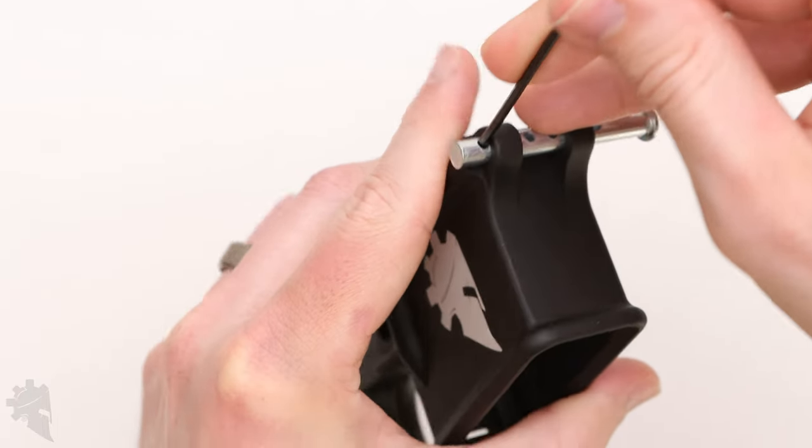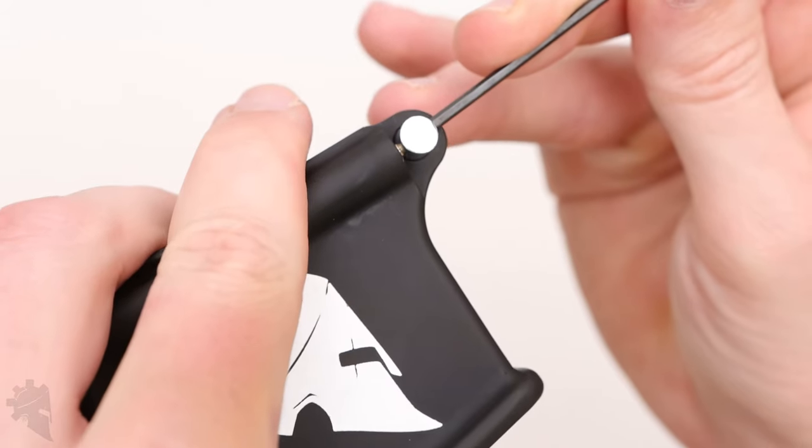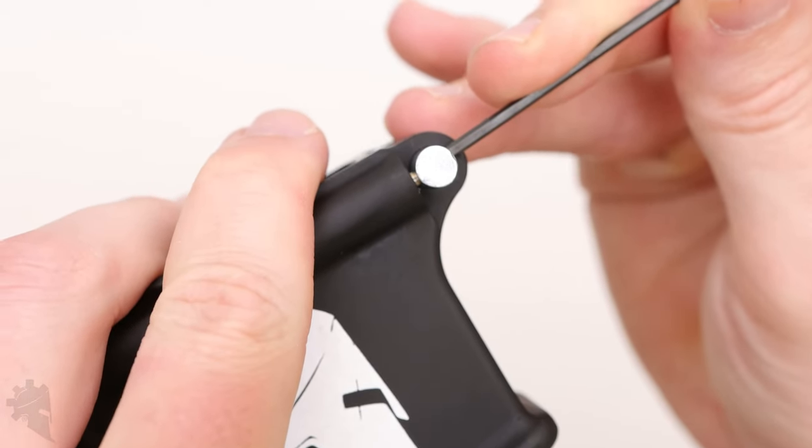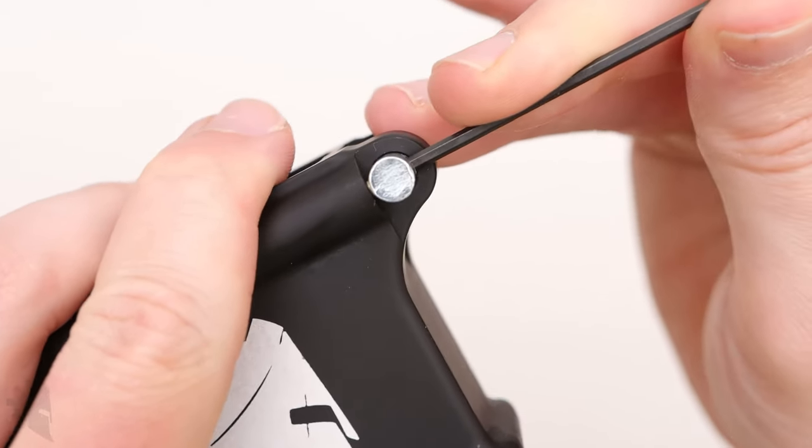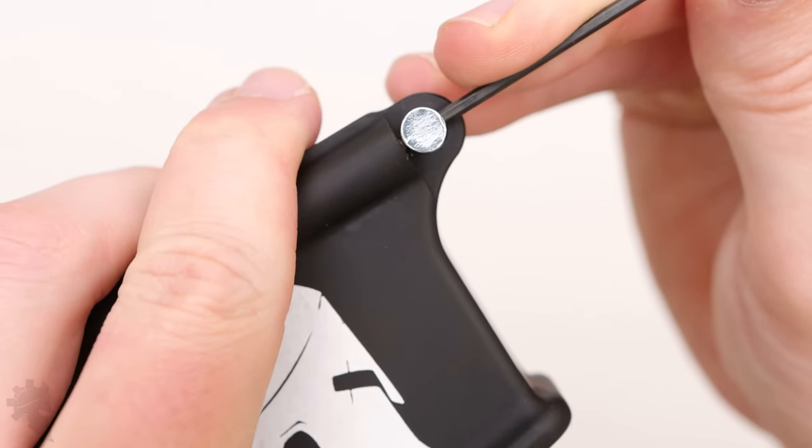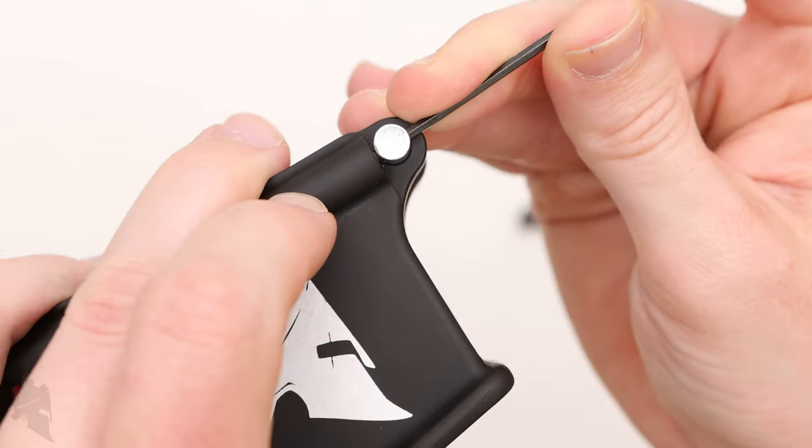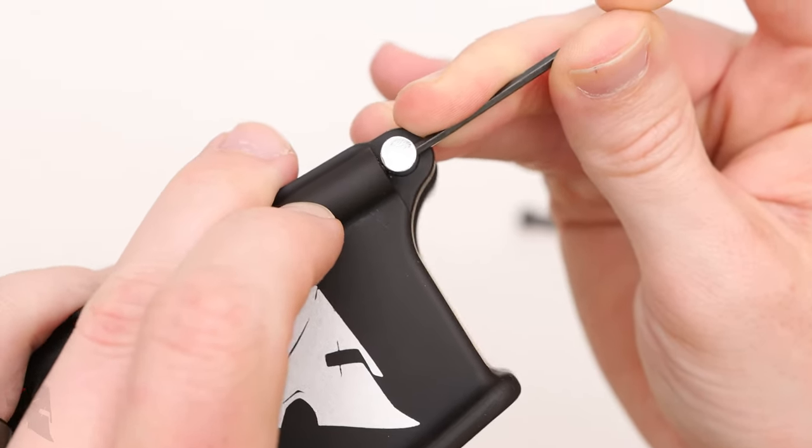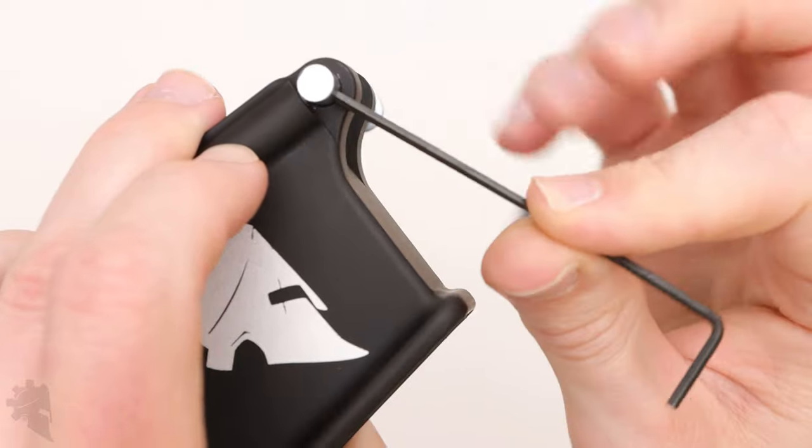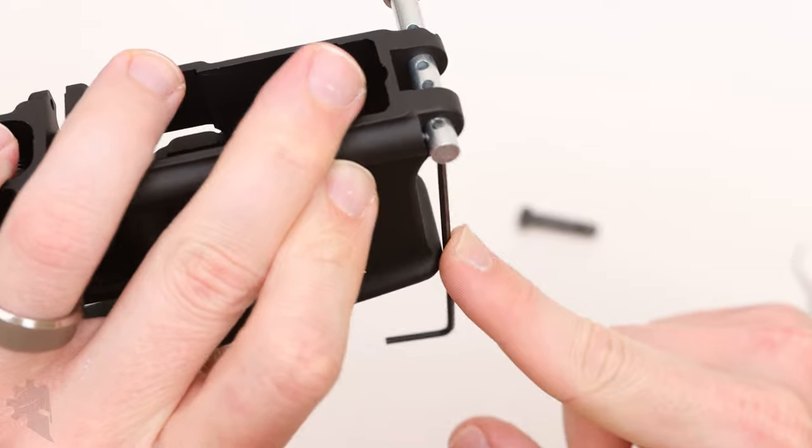You're going to compress the spring. I'm going to go to the side view here so you can see. You're going to compress the spring and the detent just to the point where you can see the Allen wrench there in the gap. So that's the detent, that's the Allen wrench, and then I'm going to rotate the Allen wrench 90 degrees so that the pin rotates in the receiver like so.